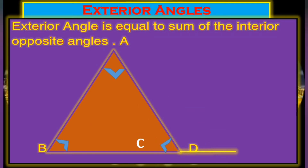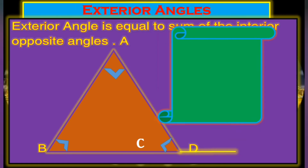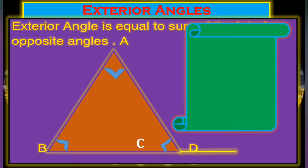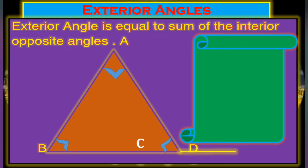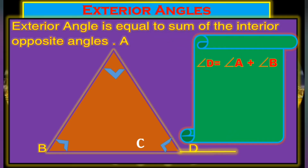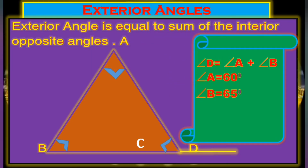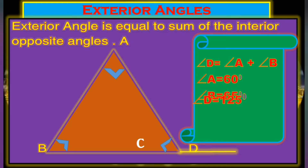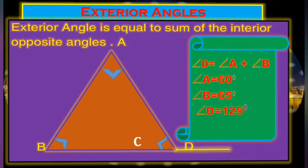In triangle A, B, C, with exterior angle D: D equals A plus B. For example, angle A is 60 degrees, angle B is 65 degrees, so angle D is 60 plus 65 degrees. This is how we apply this principle.